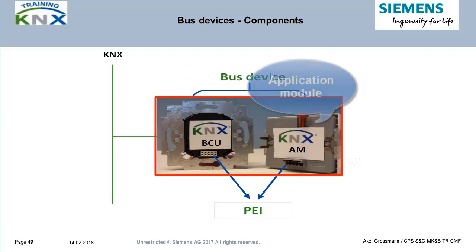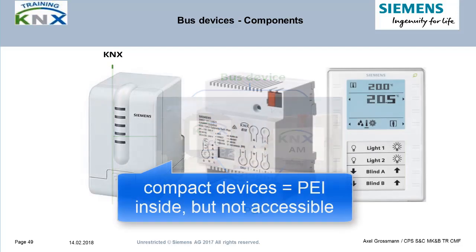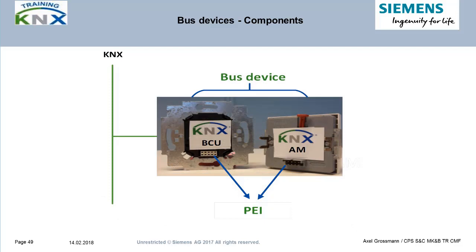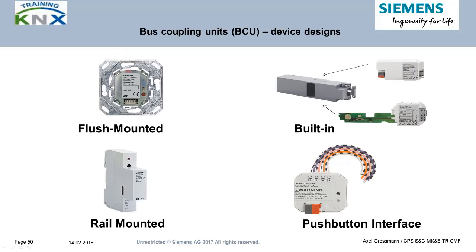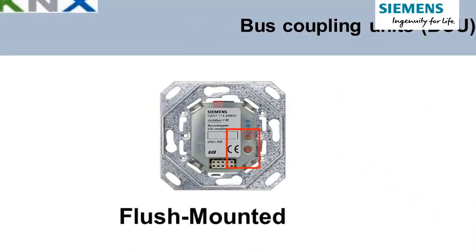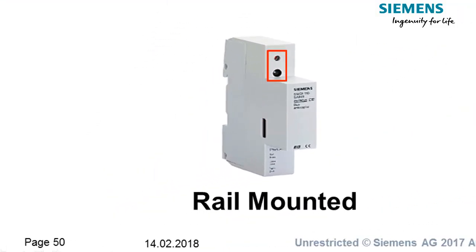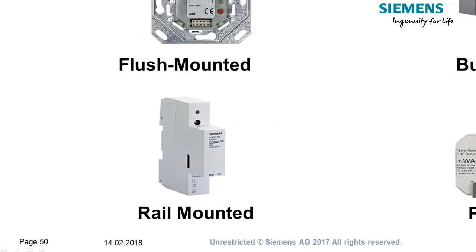In principle, bus devices consist of an application module and a bus coupling unit connected by the PEI. Often these parts are already assembled and fixed to each other by the manufacturer to form one single unit, so there is no accessible PEI anymore — though internally it still exists. On the flush-mounted BCU you can see the PEI, program button, and program LED. The same is true with the rail-mounted version. Both BCUs are the so-called universal classic type, which were once sold by all KNX manufacturers and would have been exchangeable in principle.